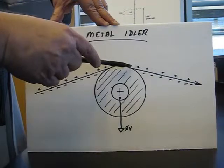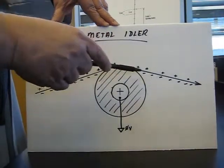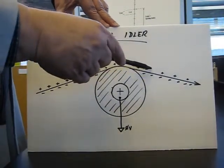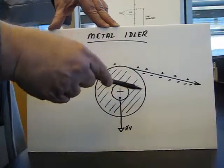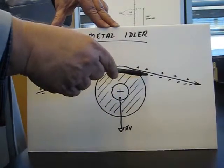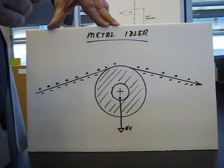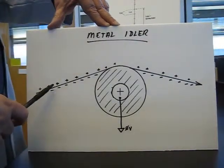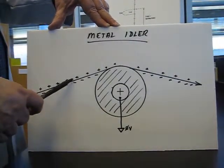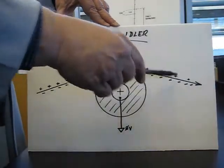Then as the web is departing from that roller the plus charges here attract negative charges up from ground and recoat the web with charges so there's almost no difference in the charges on the web as it goes over a metal roller.